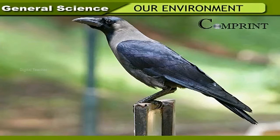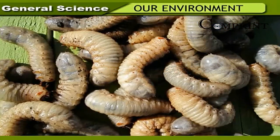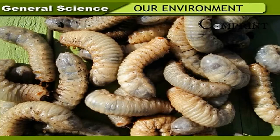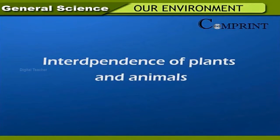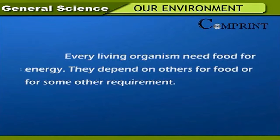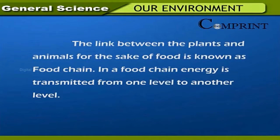Decomposers: Organisms which live in soil, like bacteria and fungi, decompose dead animals and plants and release different elements. These organisms are known as decomposers. Interdependence of plants and animals: Every living organism needs food for energy and depends on others for food or other requirements. Food chains: The link between plants and animals for the sake of food is known as a food chain, in which energy is transmitted from one level to another.